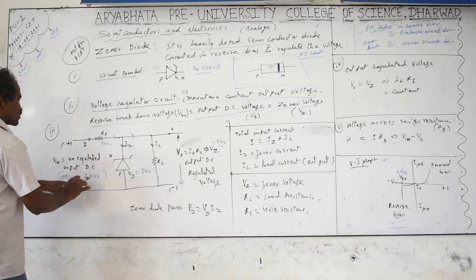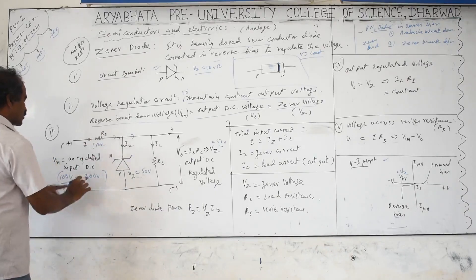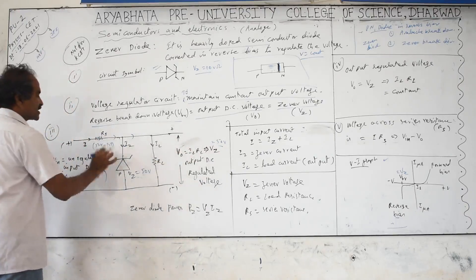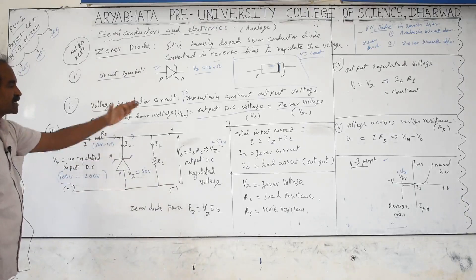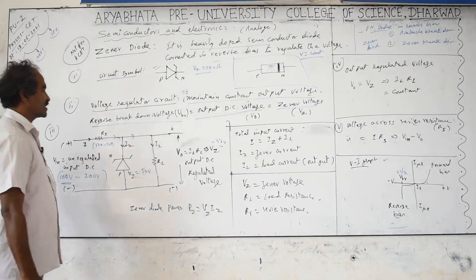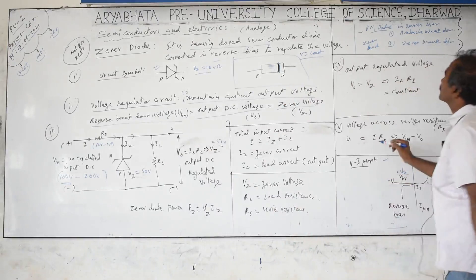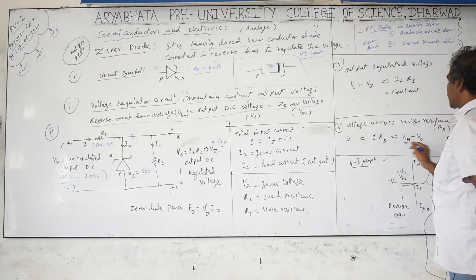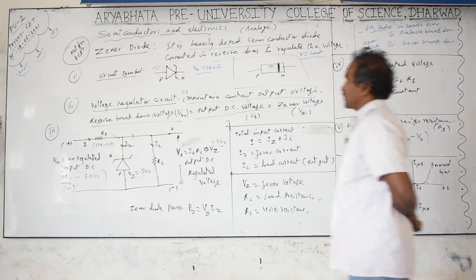The voltage across the series resistance changes between 50 V and 150 V as the input fluctuates between 100 V and 200 V. The key relations are: output regulated voltage Vo = Vz = IL × RL, and voltage across series resistance = I × Rs = Vinput − Vo. Using these relationships, one can find the voltage across the series resistance, load current IL, or total current I.